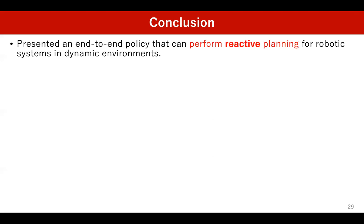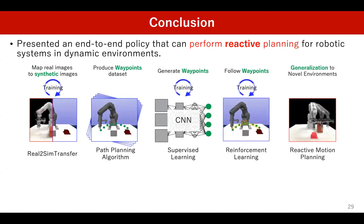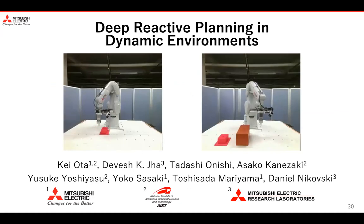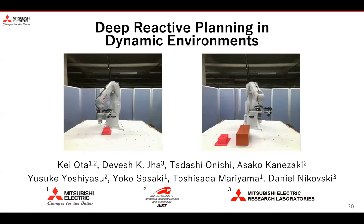To conclude, we presented an end-to-end policy that can perform reactive planning for robotic systems in dynamic environments. The proposed system consists of four pipelines, and we demonstrated that it outperforms several baseline methods, allowing a 6-DOF manipulator arm to perform reactive planning in complex dynamic environments. For more details, please check our paper accepted at CoRL 2020.